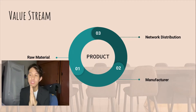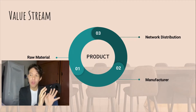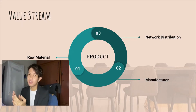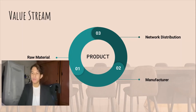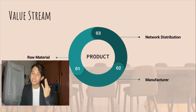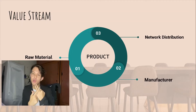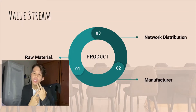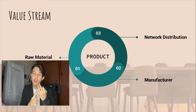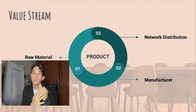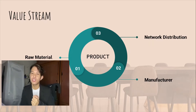For the value stream for product industry, there are three categories: raw material, manufacture, and distribution. An organisation in a product industry needs to consider adding value for these three parts. However, the value stream of a product industry is not limited to only these three parts, because there are much more values that need to be considered to increase the organisation's competitiveness as well.